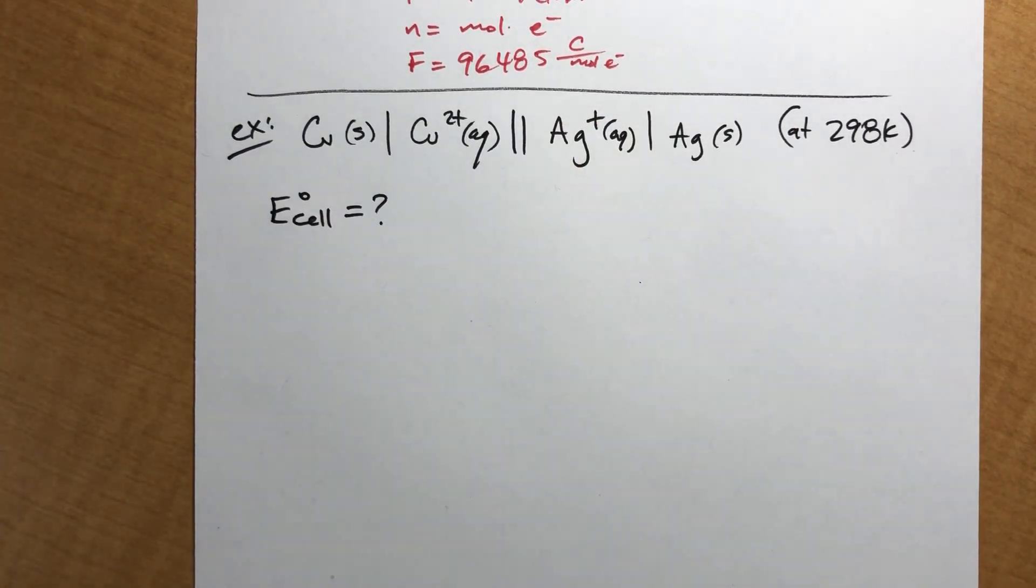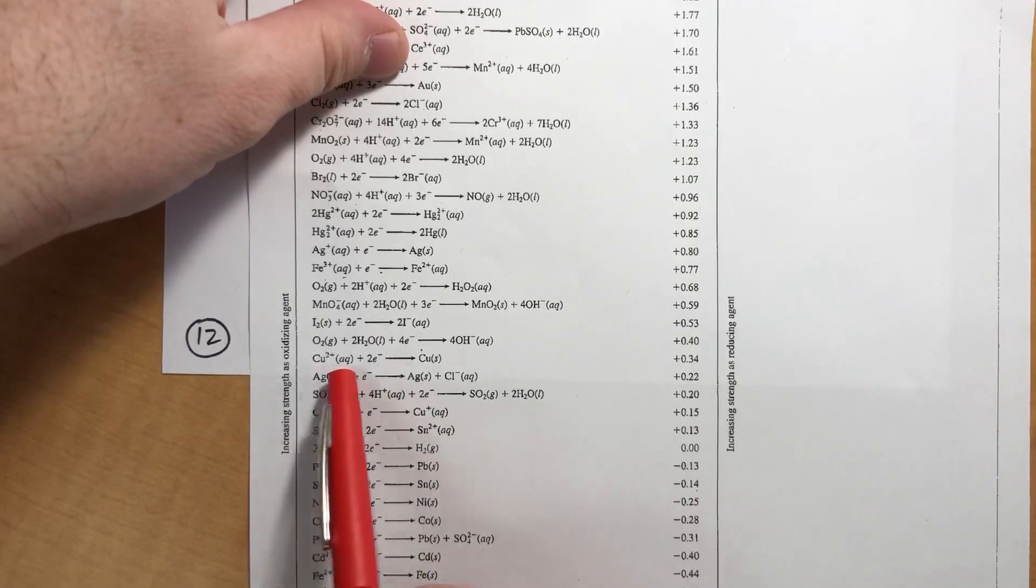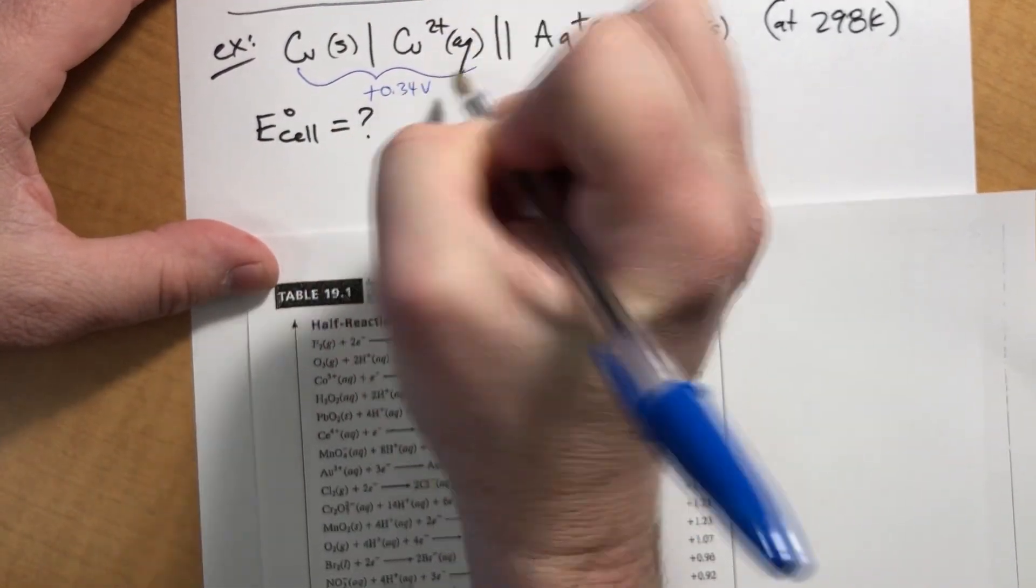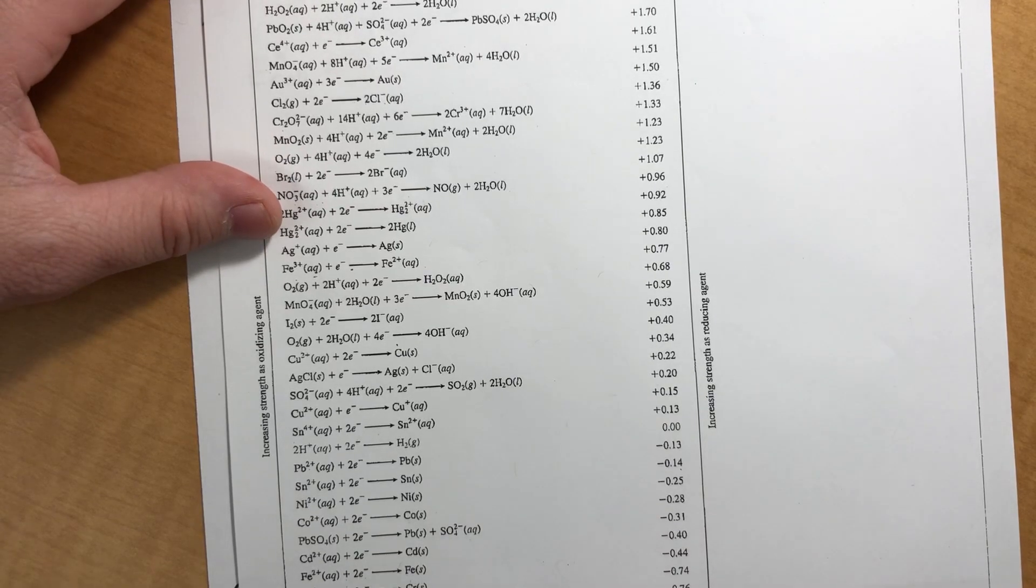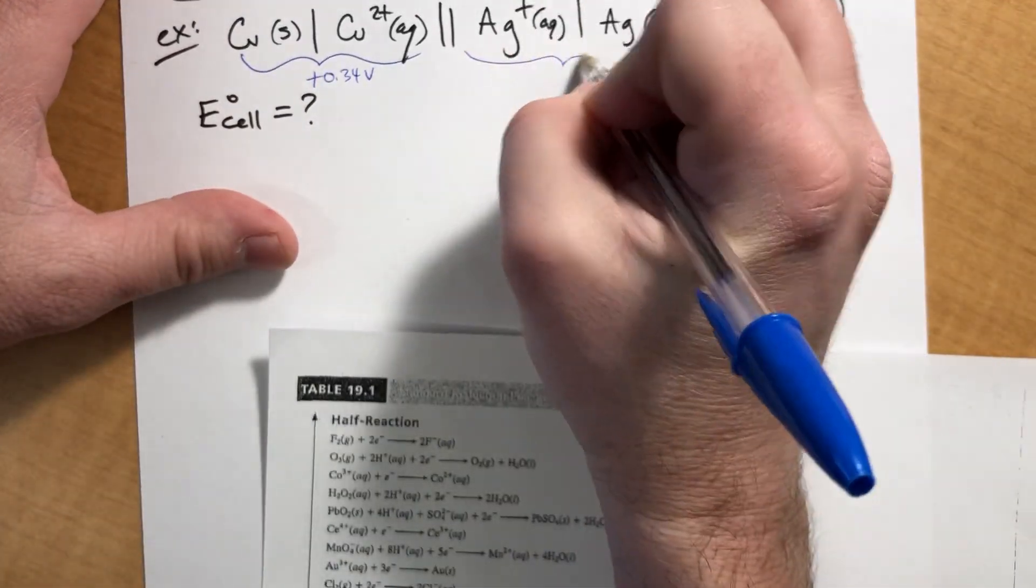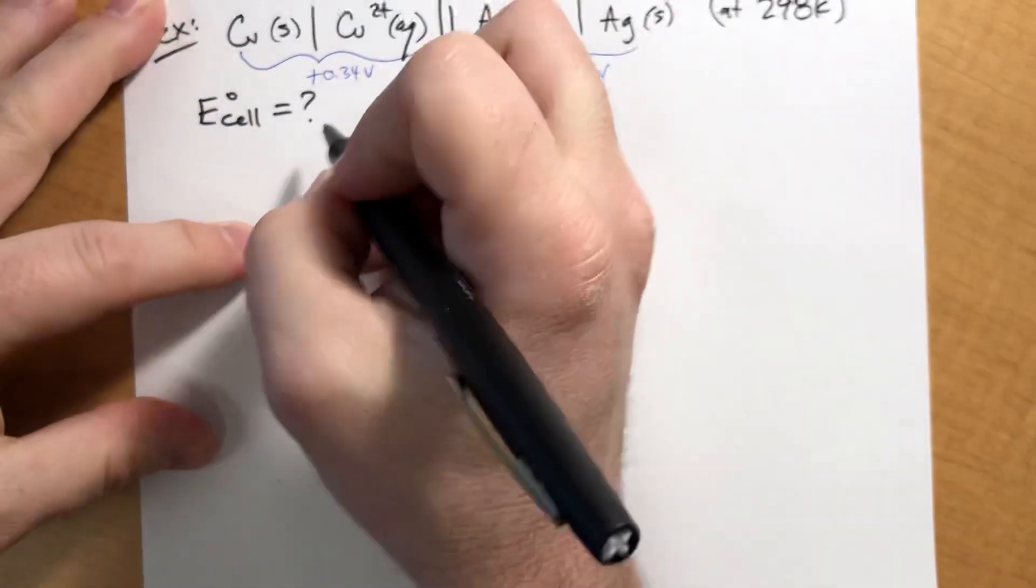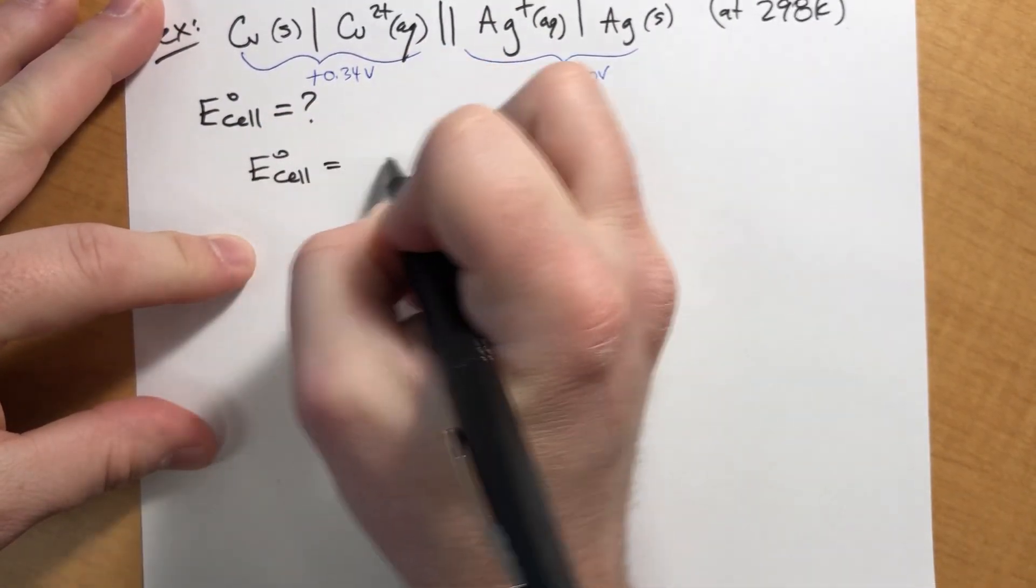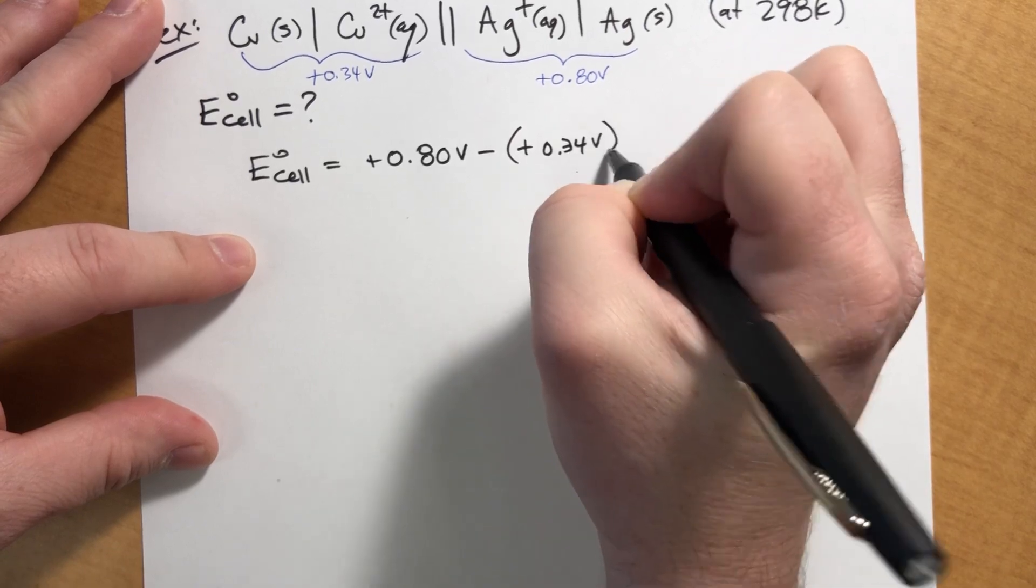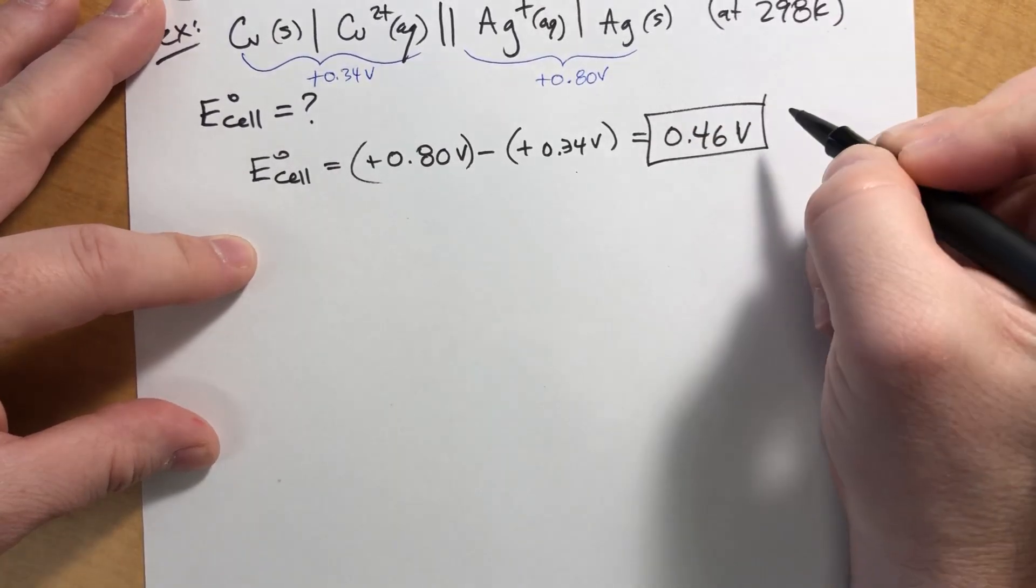We need to look all these things up on that table. So copper to copper two plus is positive 0.34 volts. Silver to silver plus is right here, and it's positive 0.80. And literally you just take the right minus the left. So E sub cell, standard conditions, equals positive 0.80 volts minus positive 0.34 volts. And we get a value of 0.46 volts. Pretty easy. We use the table. Everything's great.